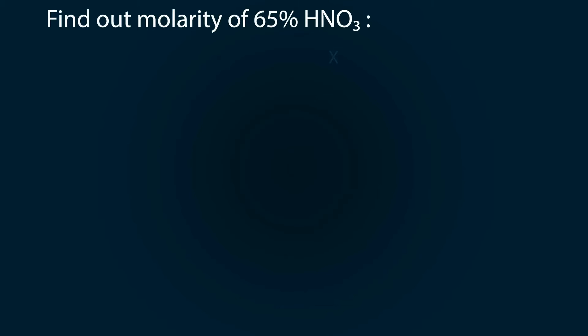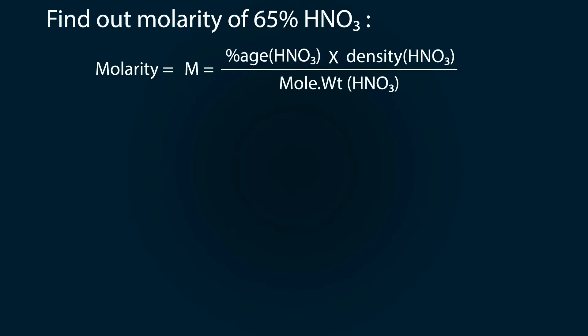Let's do some calculations. First of all, we have to find out the molarity of 65 percent HNO₃. The molarity formula is percentage of HNO₃ multiplied by its density, whole divided by molecular weight multiplied by 10. The percentage of HNO₃ is 65, its density is 1.19. Now let's find out the molecular weight. For that, let's go to the periodic table.